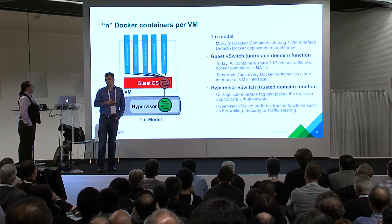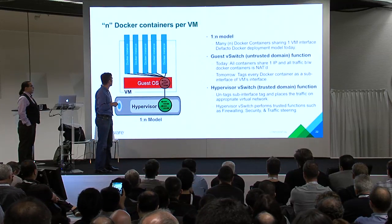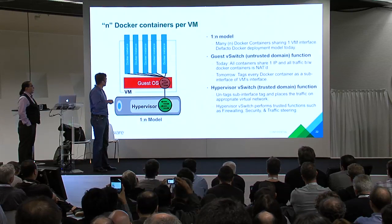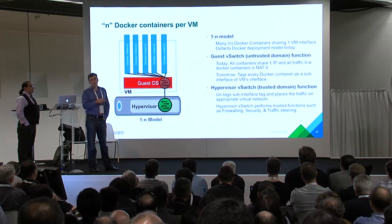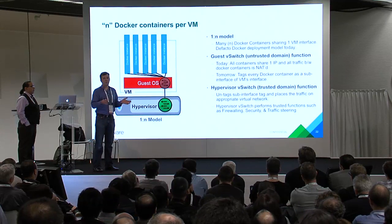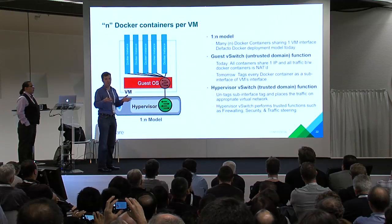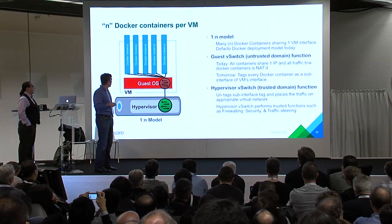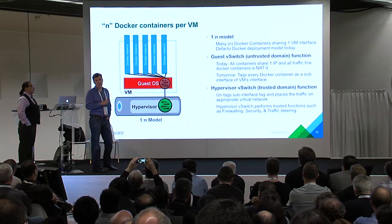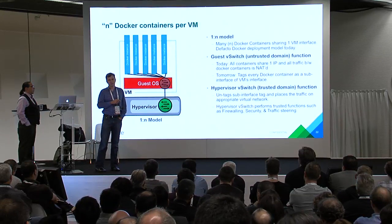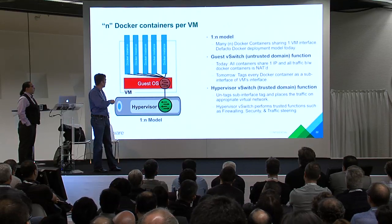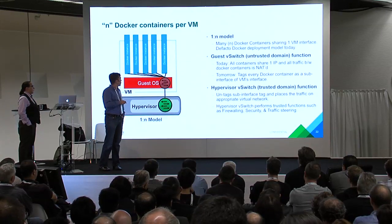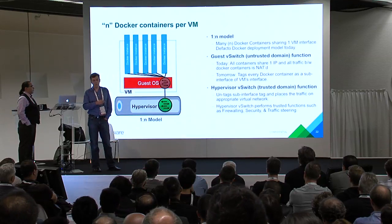Another model we're looking at supporting is running multiple Docker containers inside a VM. If any of these Docker instances breaks out and all the policy was implemented in that red OVS, it could modify the traffic and break down the isolation that you're looking to provide through NSX or any logical networking service. What we're proposing is to use the red OVS to tag the information to identify which Docker instance it is, and then relay that down to the green OVS that actually enforces the policy and connects the tunnels. This requires more work with OVS and the upstream Docker community, but we are beginning to work on it.